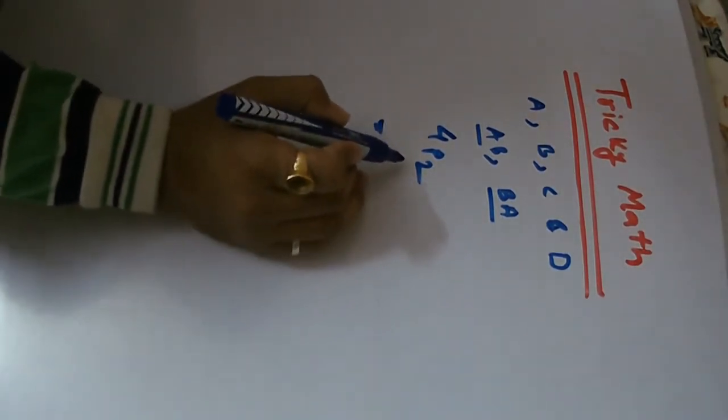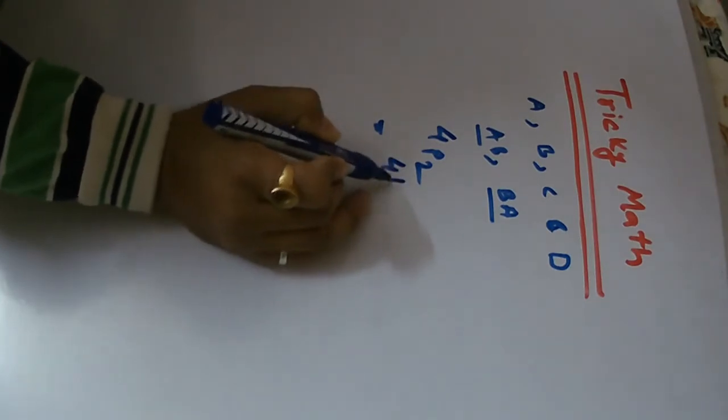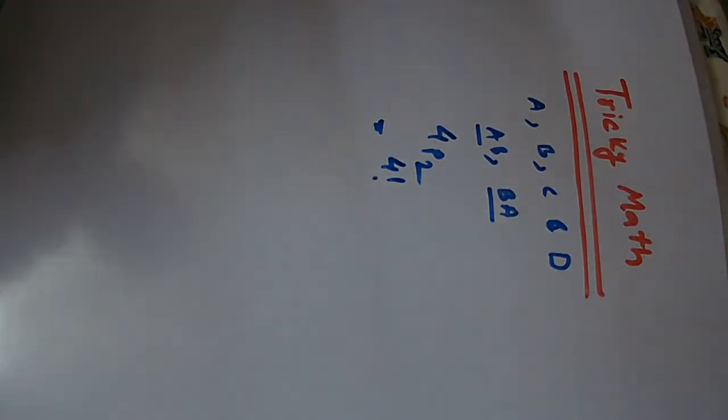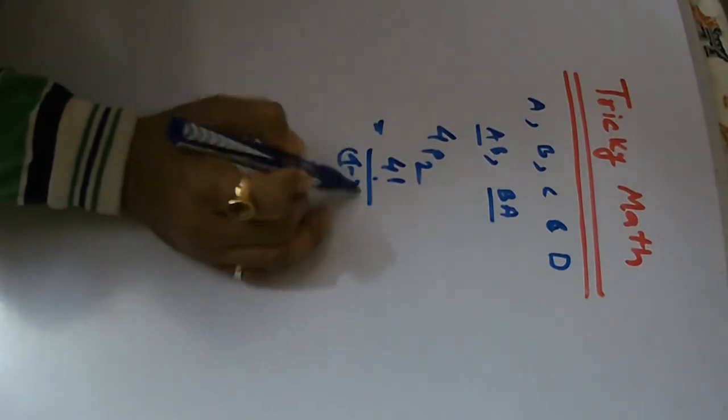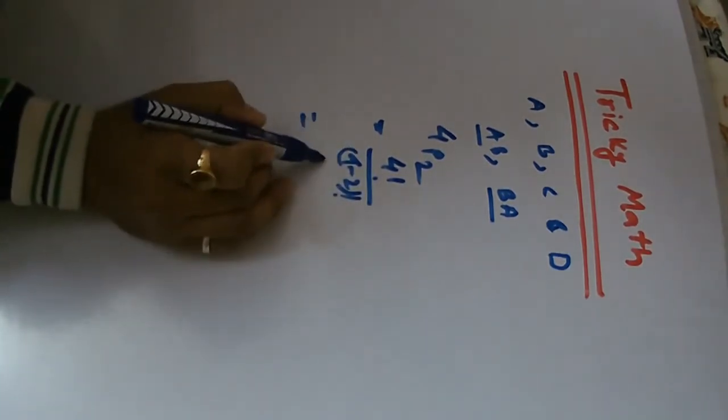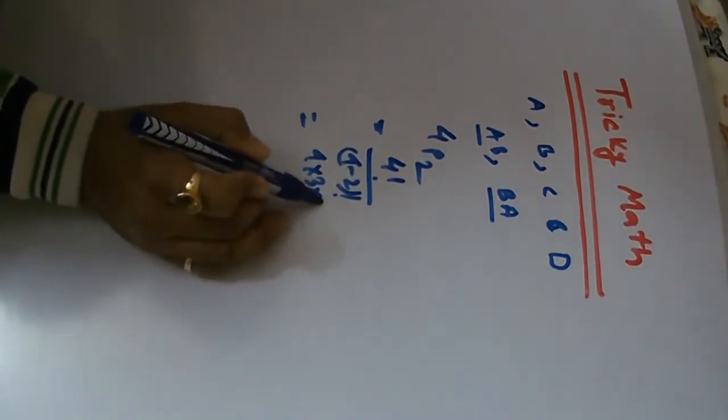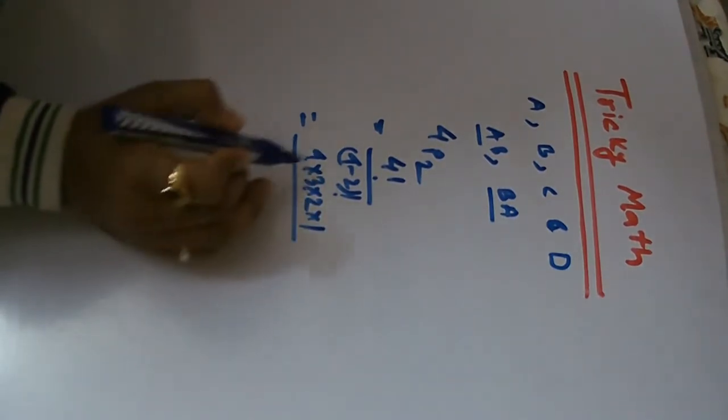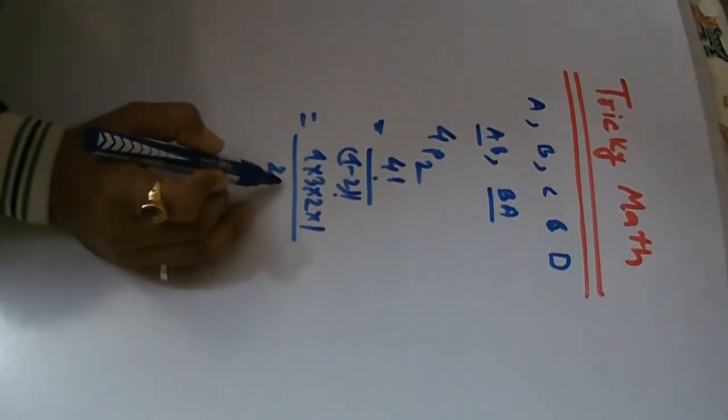This is the calculation of 4P2. The formula is 4 factorial divided by 4 minus 2 factorial. 4 factorial means 4 into 3 into 2 into 1, and this is 2 factorial means 2 into 1.